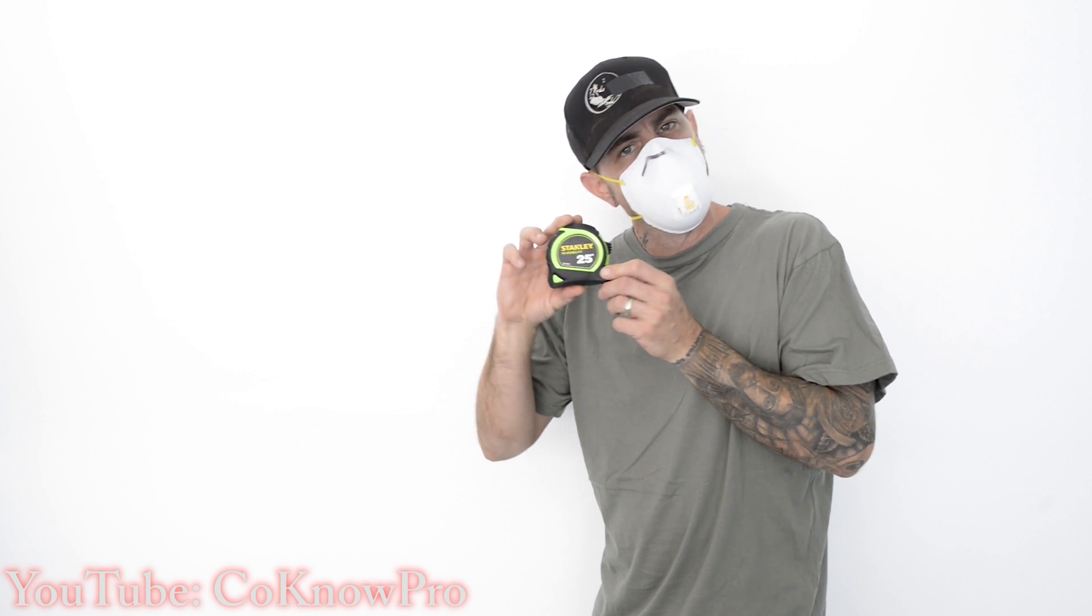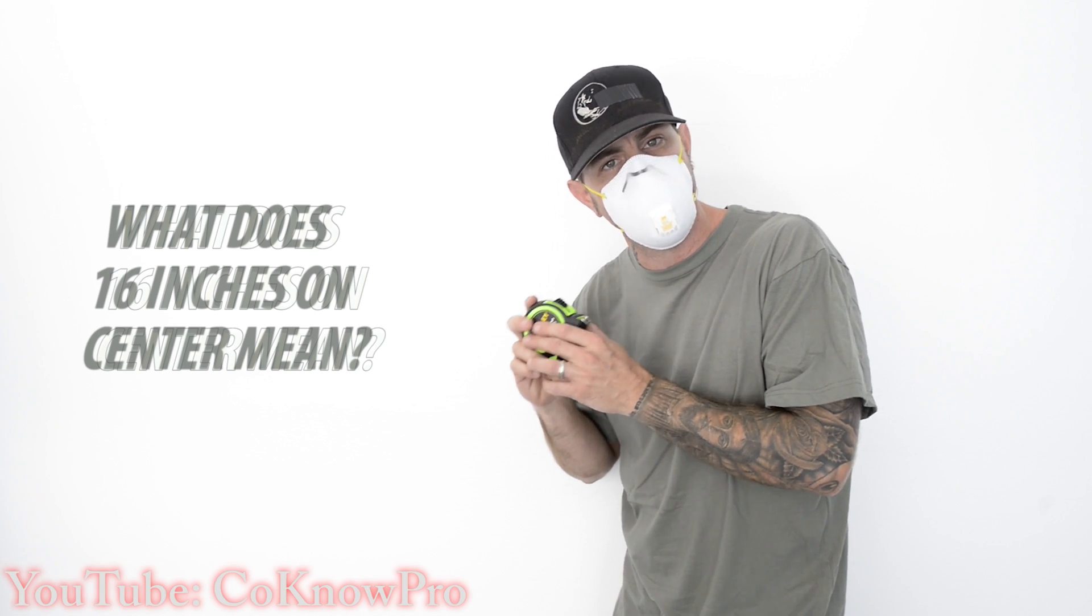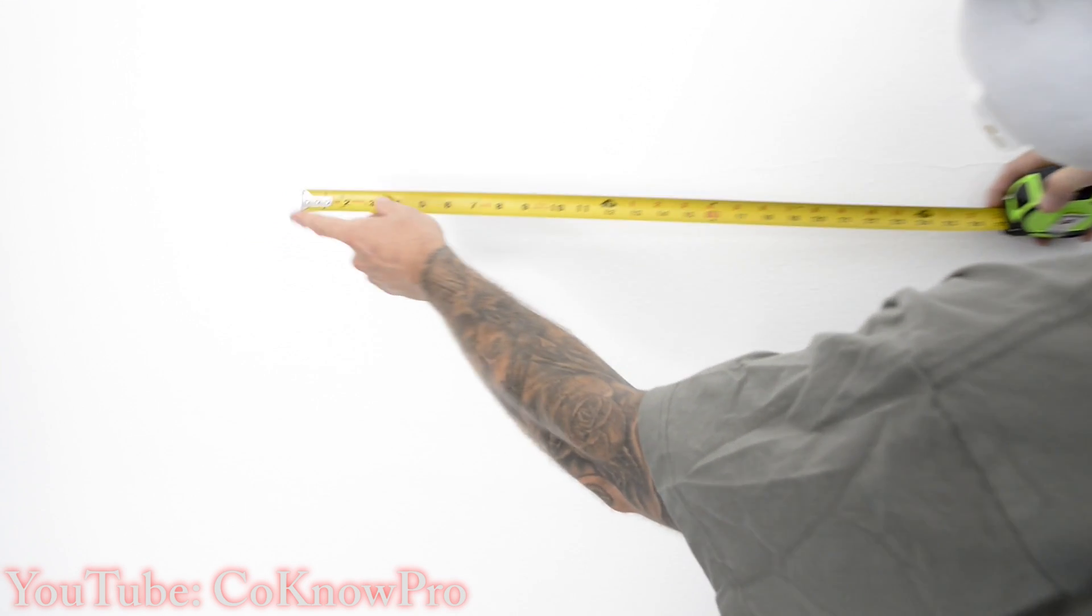What's up everybody, CoKnowPro coming at you with just a quick couple tips on how to use a measuring tape and what 16 on center means. Basically, when you open up a measuring tape, this is your end here, and when you pull this is 16 inches on center.